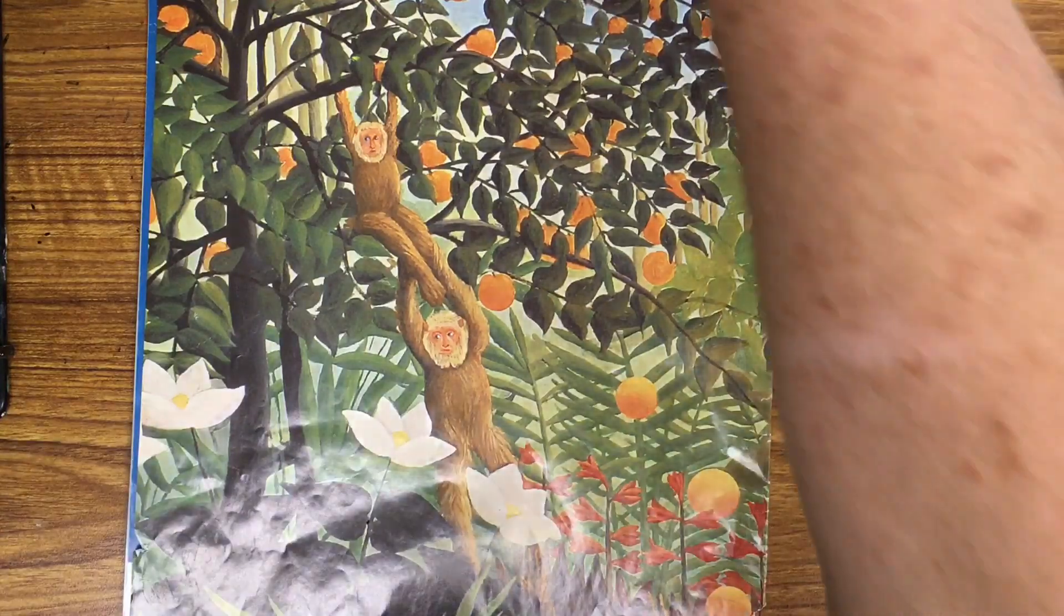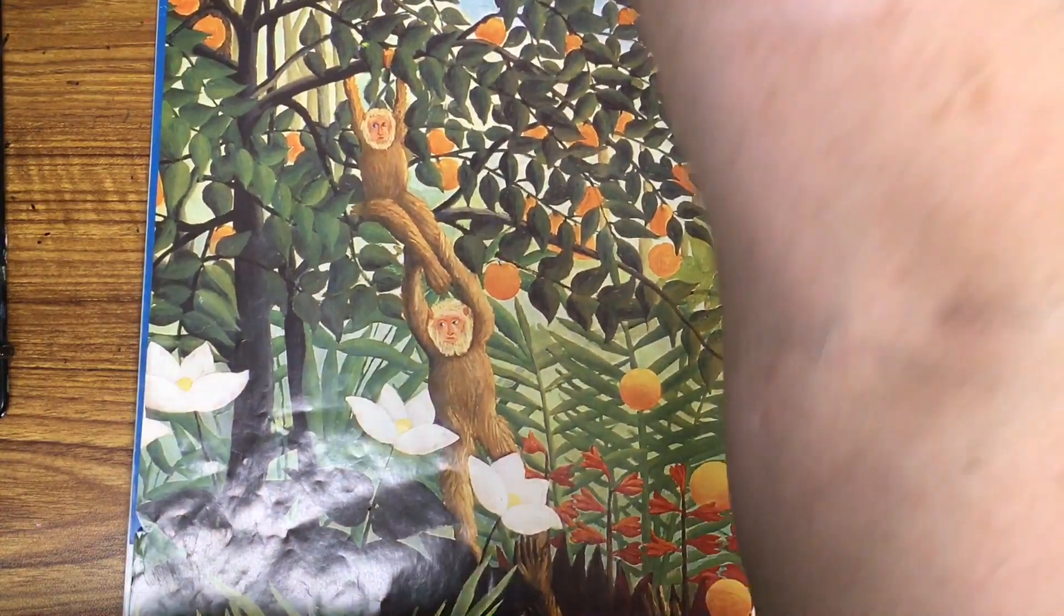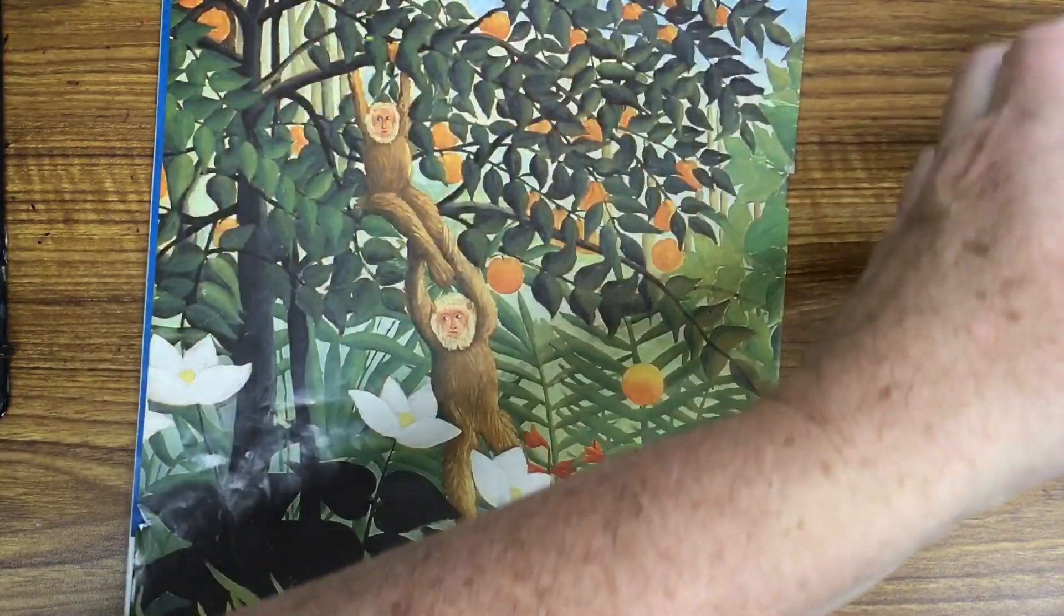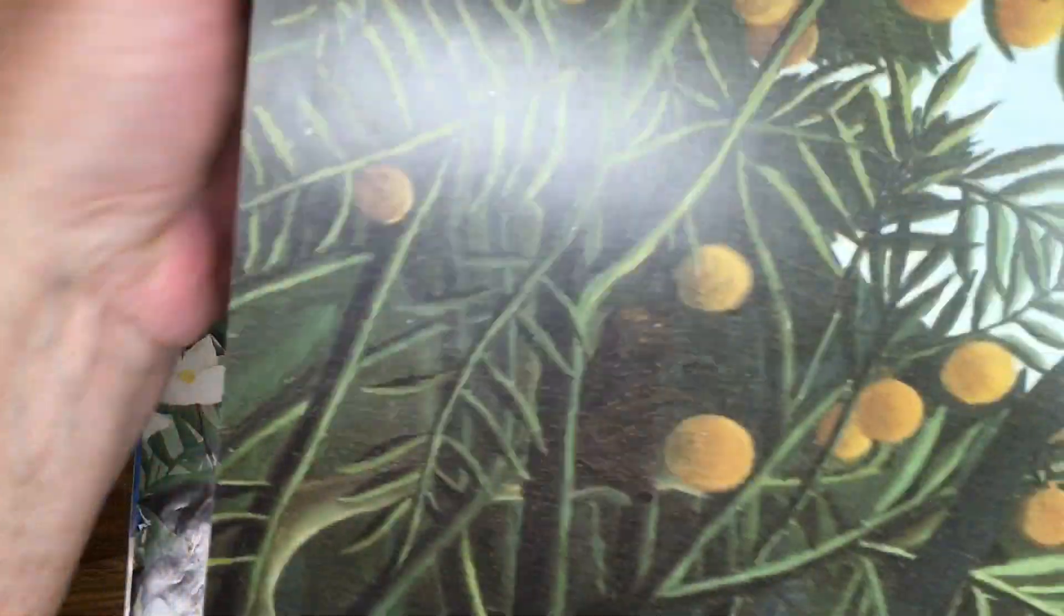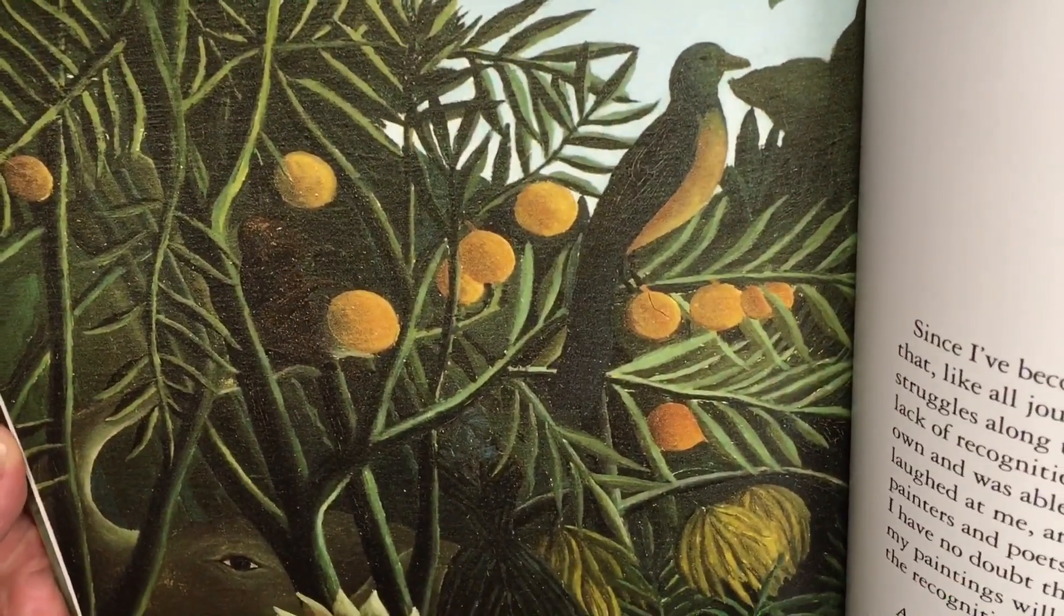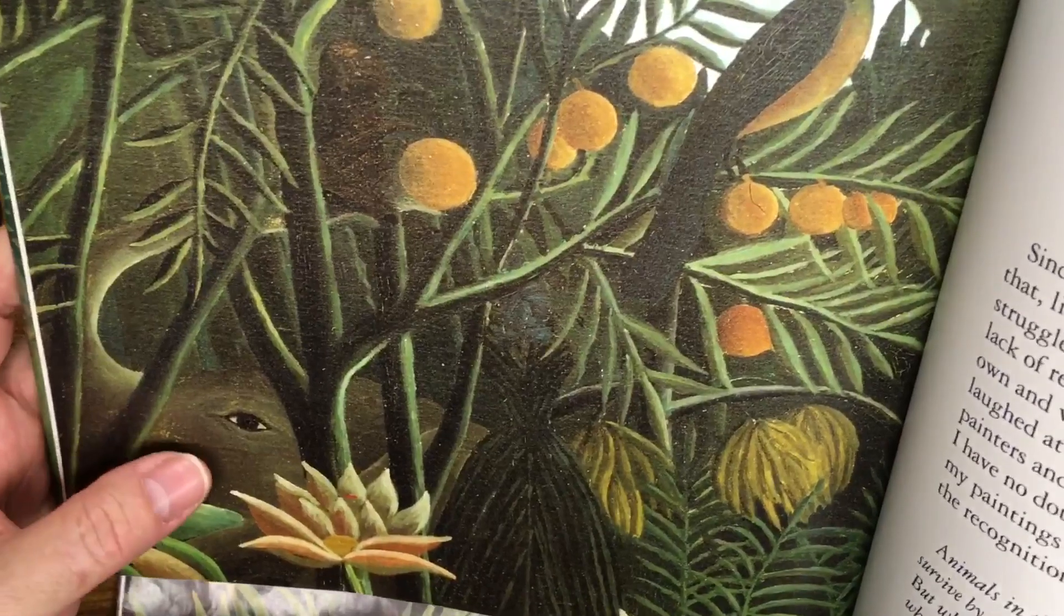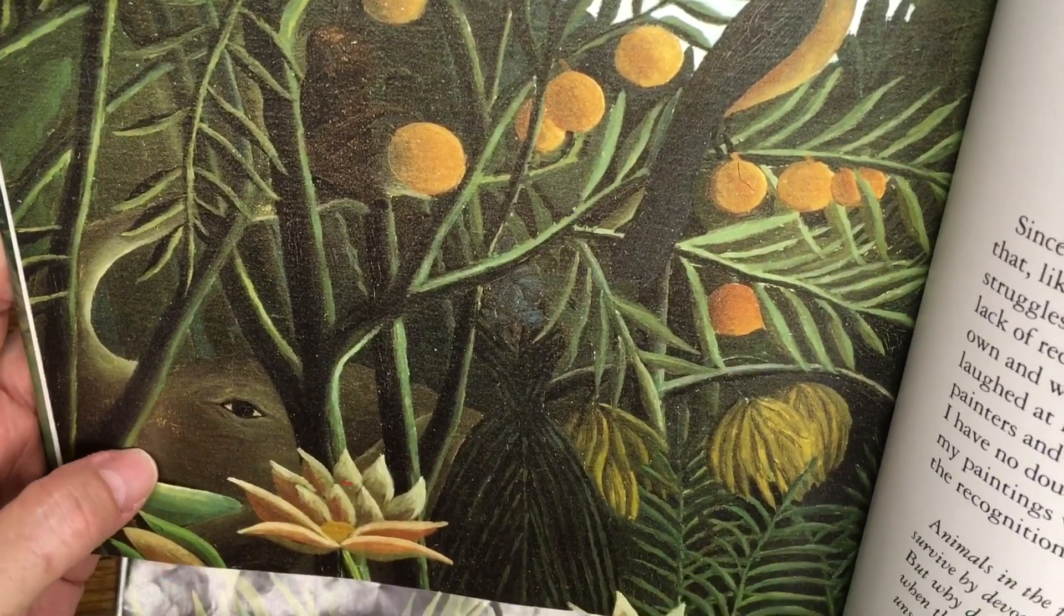Of course, he put lots of tropical plants in the middle ground. And here, this is one of my favorites. Here we have a bird sitting on an orange tree. And then hiding in the back in the middle ground is actually an elephant.